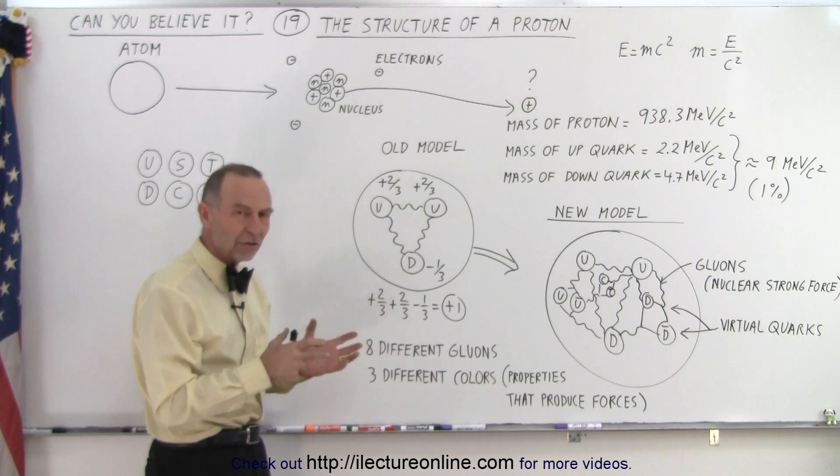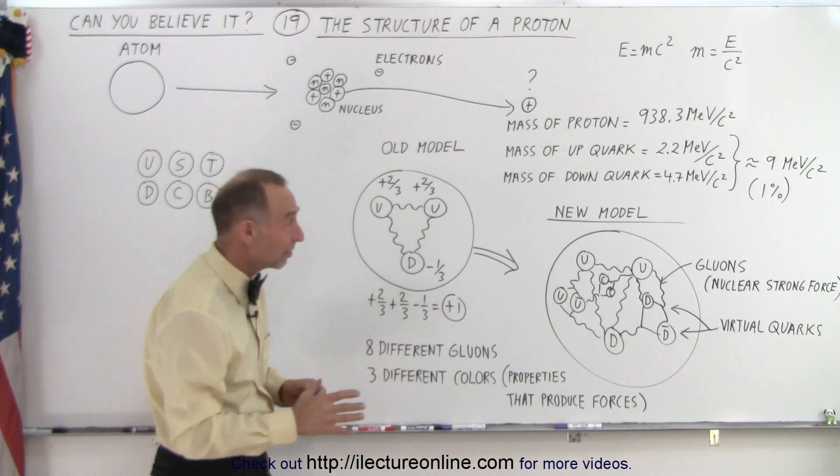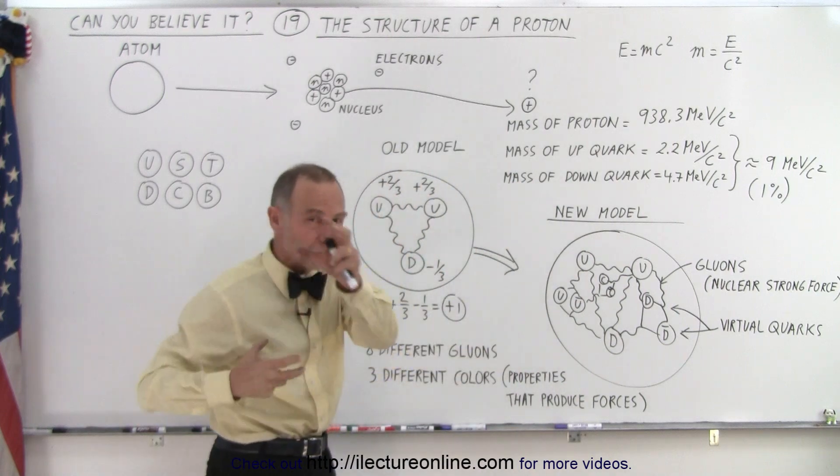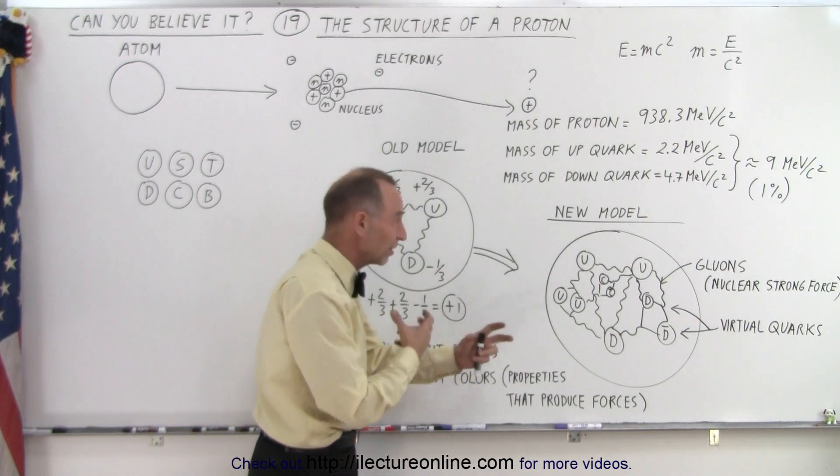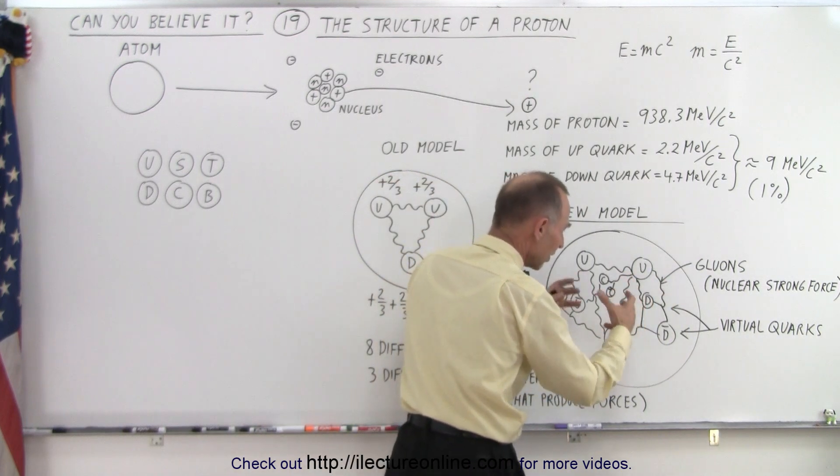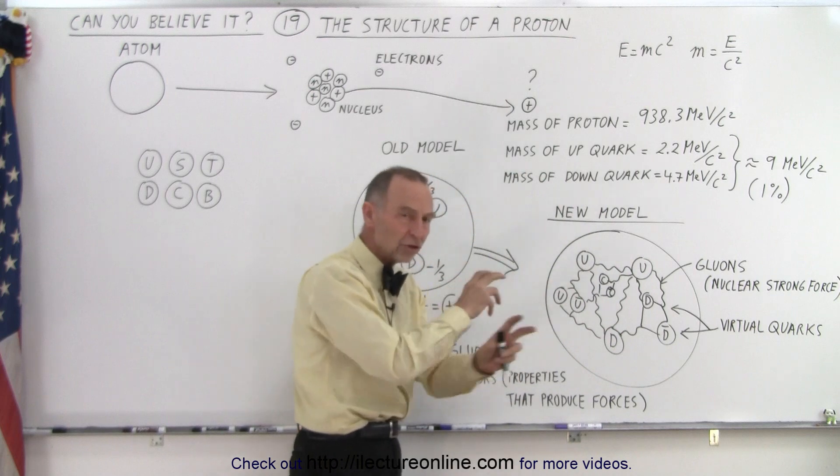And by studying this more, we began to realize it's not the simple model. What's really happening is that the two up and one down quark, well, they're constantly moving at very high speeds throughout the proton. And there's a ton of gluons in there, many, many gluons holding things together, but constantly moving and changing.